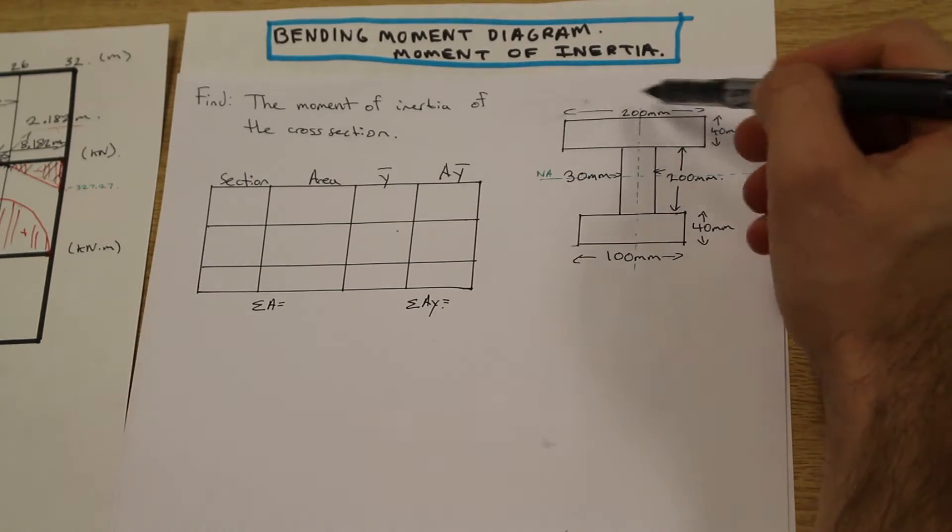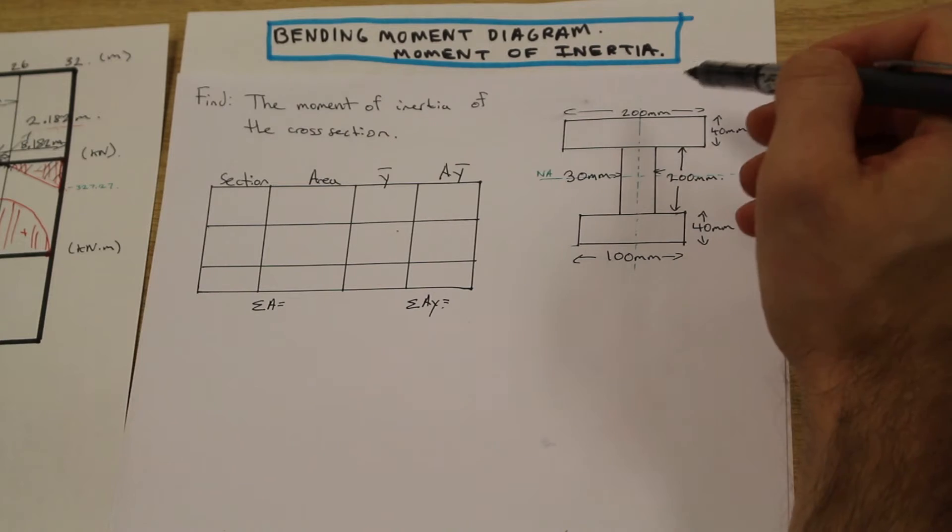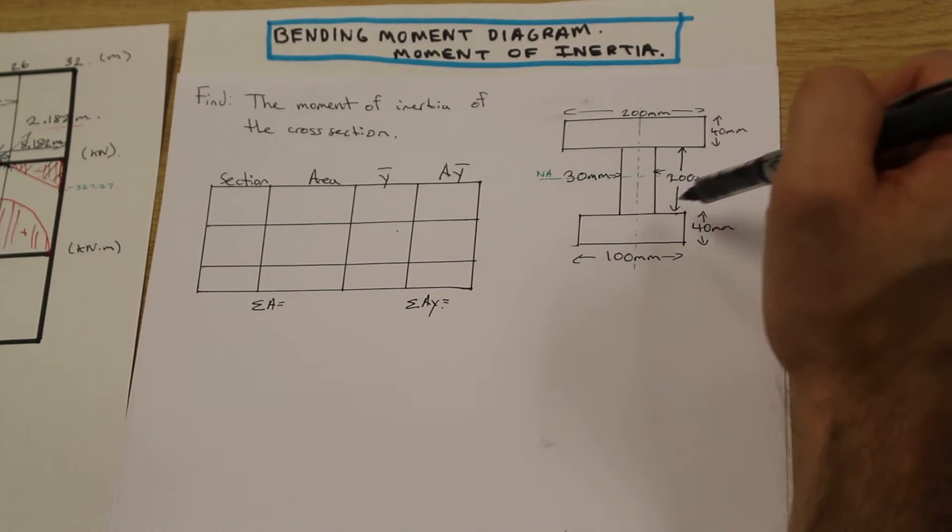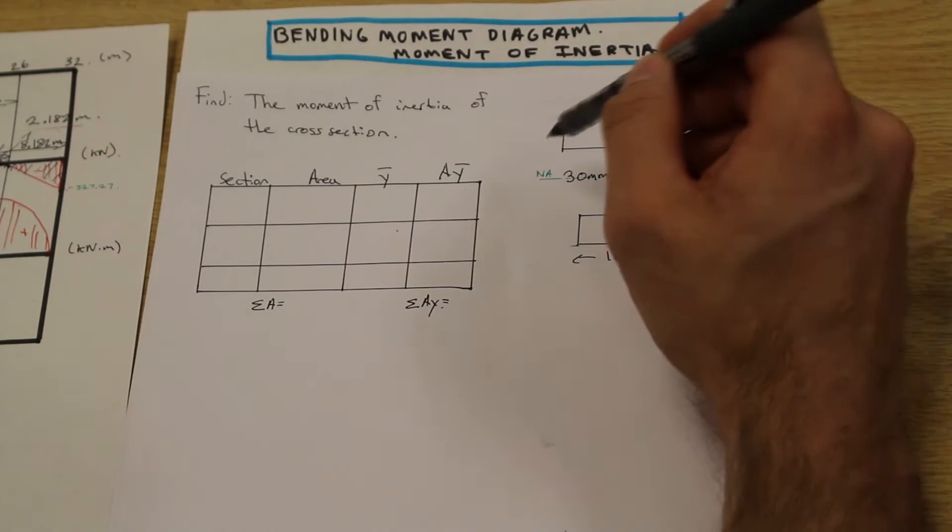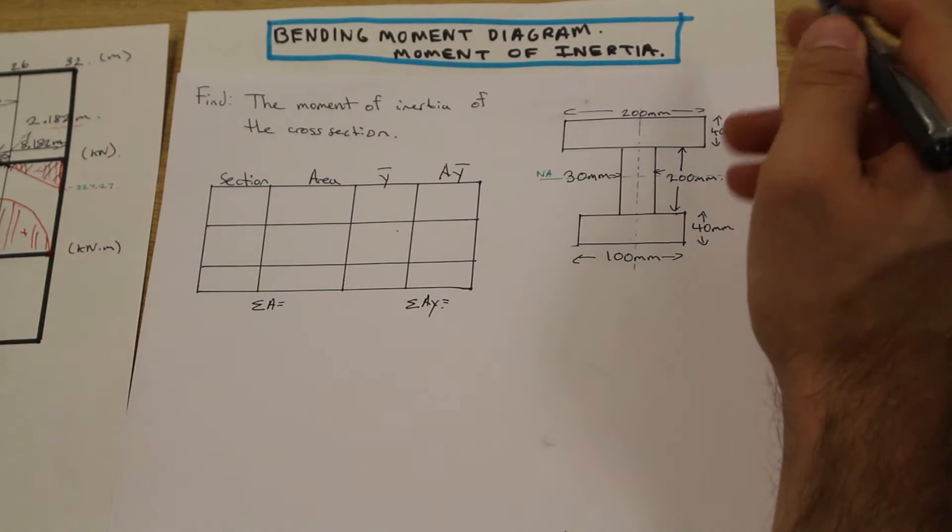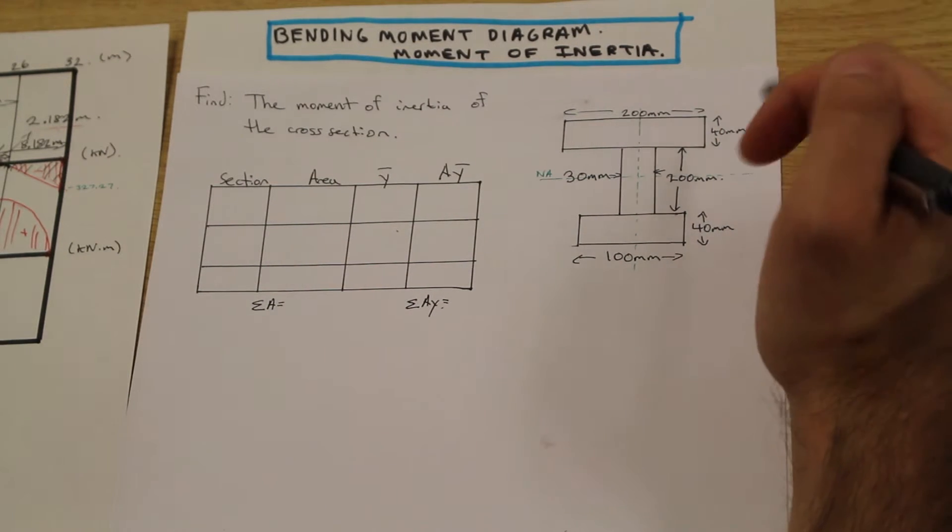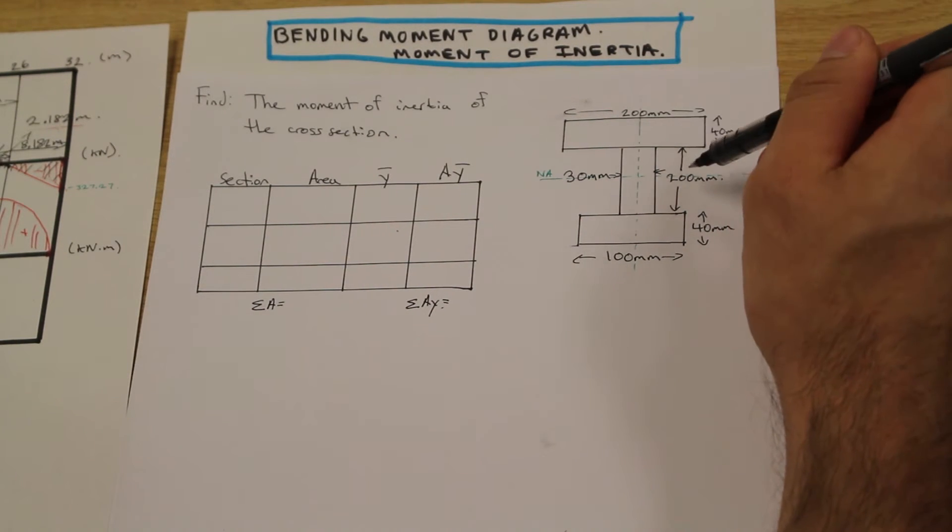What do we need to do first? Well, we have the moment of inertia. We were asked to find the moment of inertia. We're given the cross section with various dimensions. Luckily for us, this is symmetrical in the y, it's not in the x. So that's not so lucky. We are going to have to find the centroid of the shape.